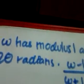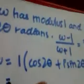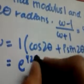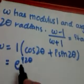Second part of the question. W is a complex number which has modulus 1 and argument 2 theta radians. Therefore, w is going to be 1 times cos 2 theta plus i sine 2 theta — modulus-argument form. For simplicity, I am going to write it as e to the power i 2 theta. Same thing.